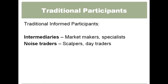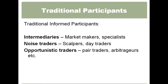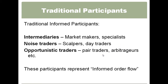Other traditional informed participants would be noise traders, scalpers like we used to be at Bright Trading, day traders — obviously looking at all the information and trying to process it as quickly as possible. If there's a potential to make money where we think an order is mispriced, we'll trade against that order hoping to make money. Opportunistic traders, pair traders, and arbitragers also fall into this category. All of these traders represent your more informed order flow.